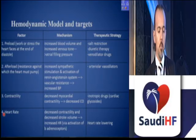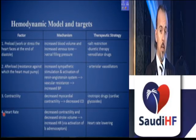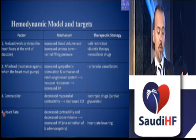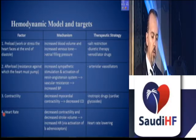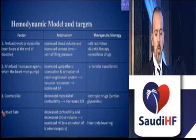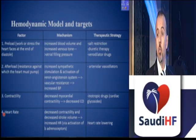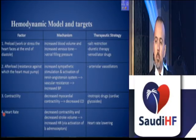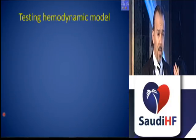In the hemodynamic model, contractility is a major concern — decreased myocardial contractility. Physicians thought that giving inotropic drugs could fix it. Heart rate is also part of the hemodynamic model, associated with decreased contractility and decreased stroke volume. At a certain level, elevated heart rate is harmful, so heart rate lowering can help in the hemodynamic model.